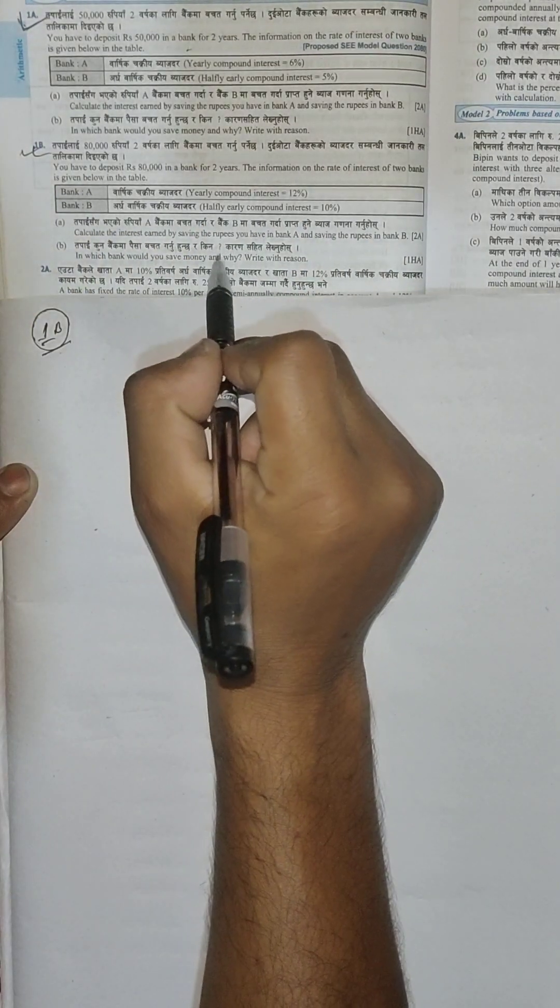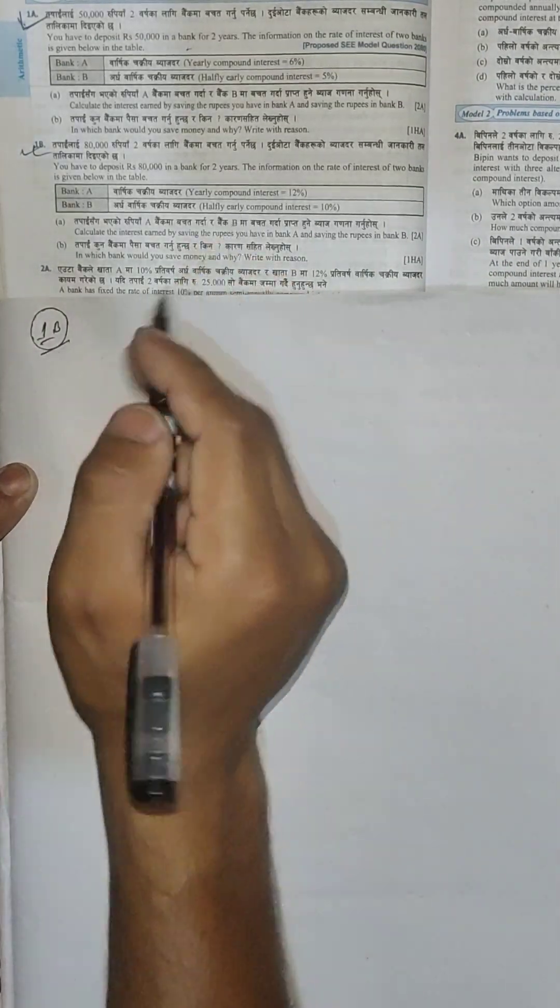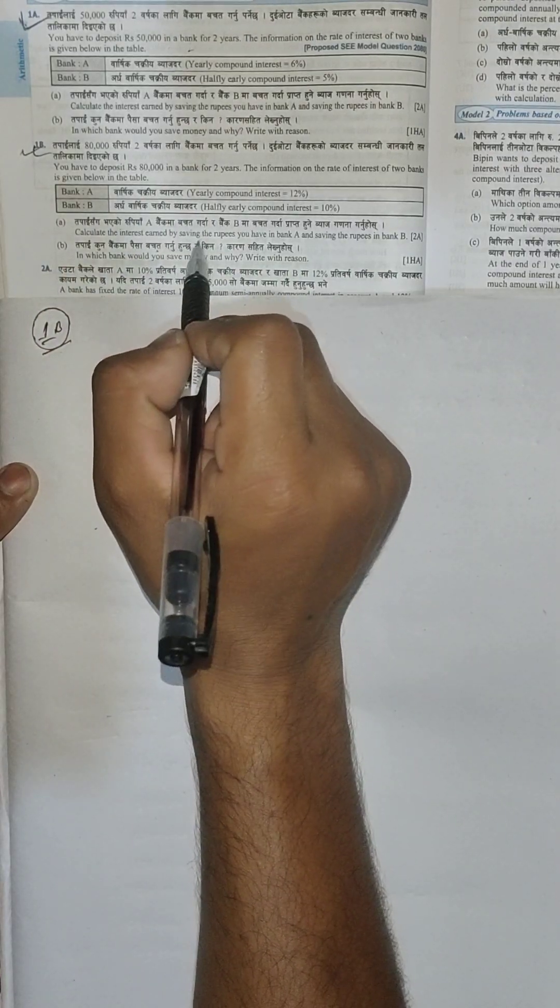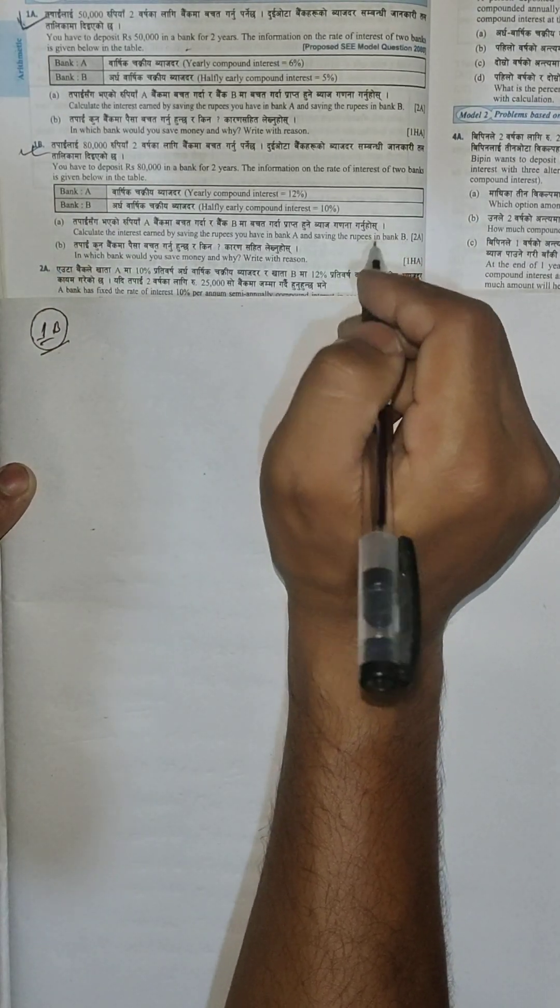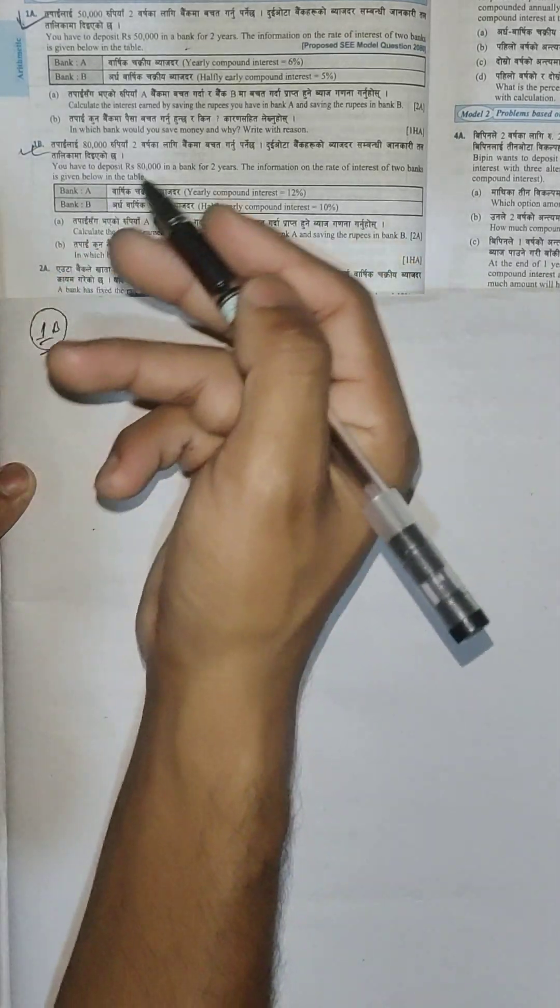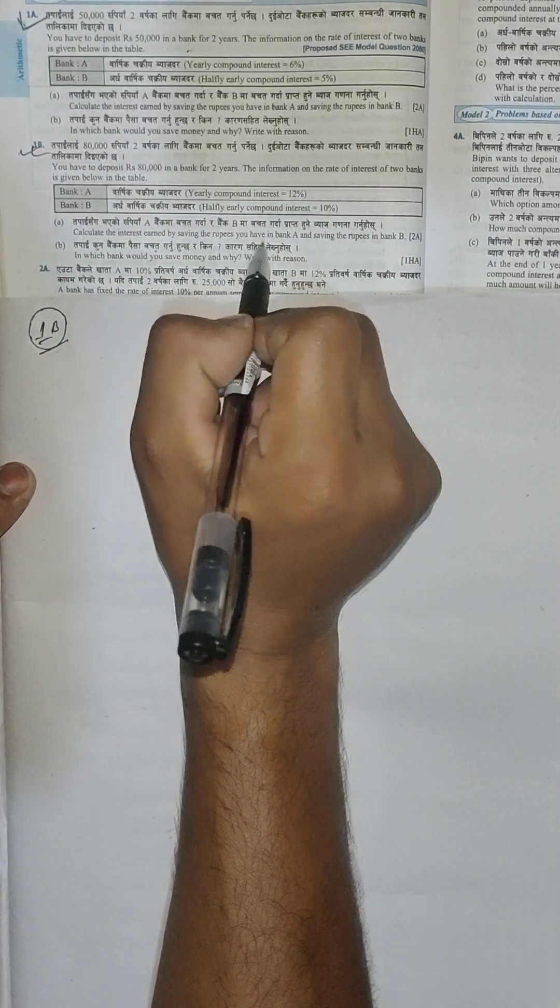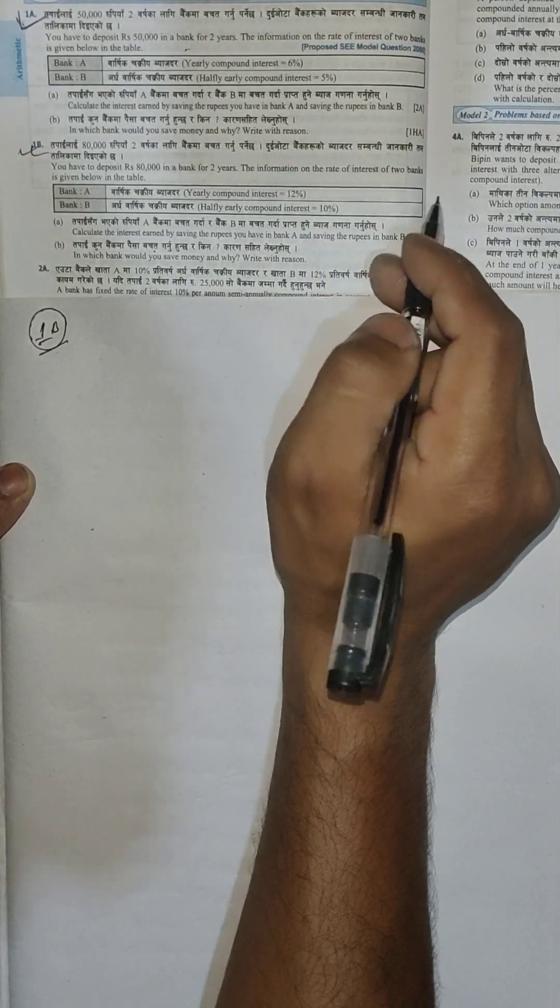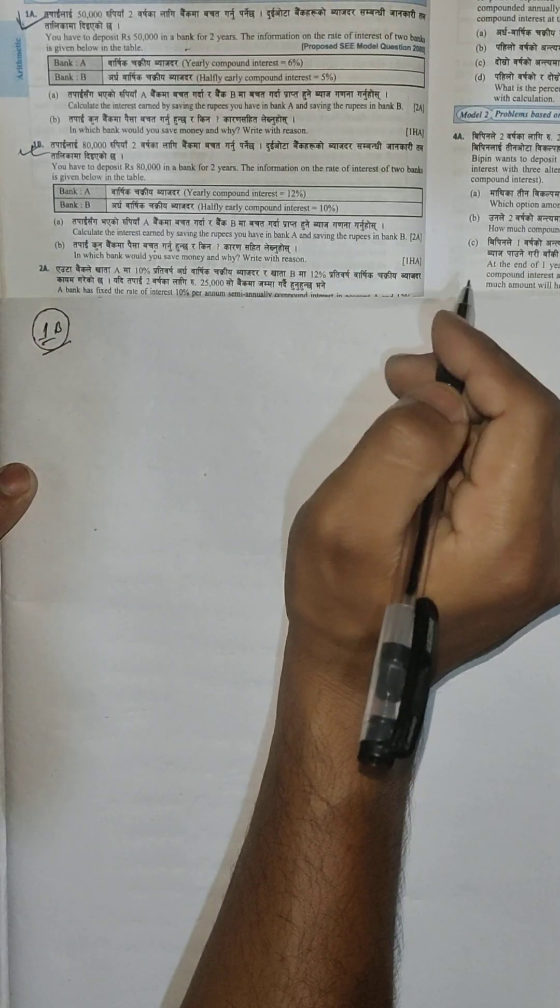The question asks: calculate the interest earned by saving the Rs. 30,000 in Bank A and saving in Bank B. That means we need to find interest for both banks.